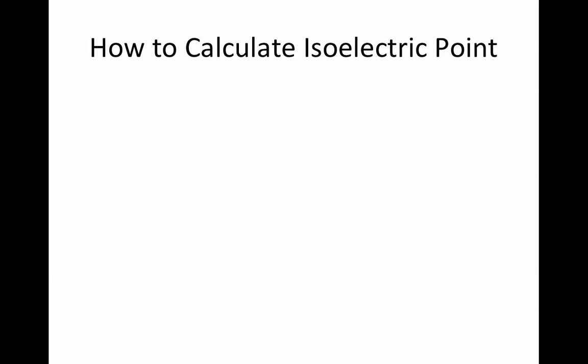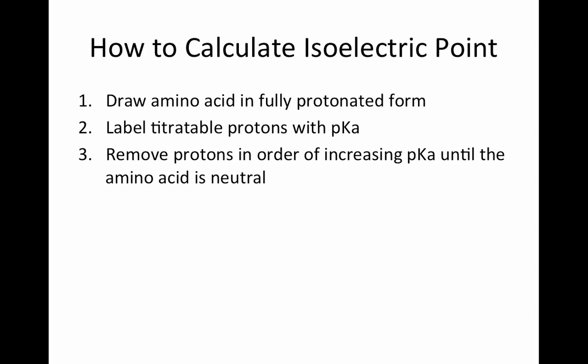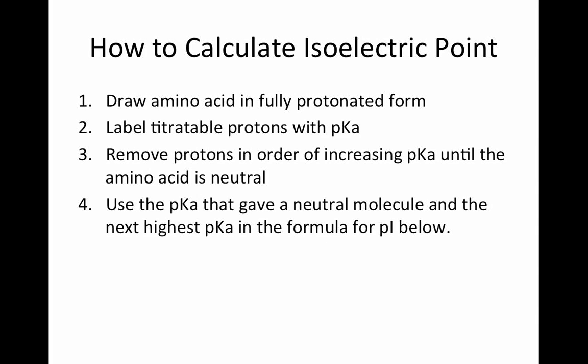There are four steps to calculating the isoelectric point of an amino acid. Step 1: draw the amino acid in its fully protonated form, including protons on the amine, carboxylic acid, and if necessary, side chain groups — at this point the amino acid will be positively charged. Step 2: label the titratable protons with their pKa values from a pKa chart. Step 3: remove protons in order of increasing pKa until the amino acid has a net neutral charge. Step 4: use the pKa that gave a neutral molecule and the next highest pKa to calculate the isoelectric point using the equation.